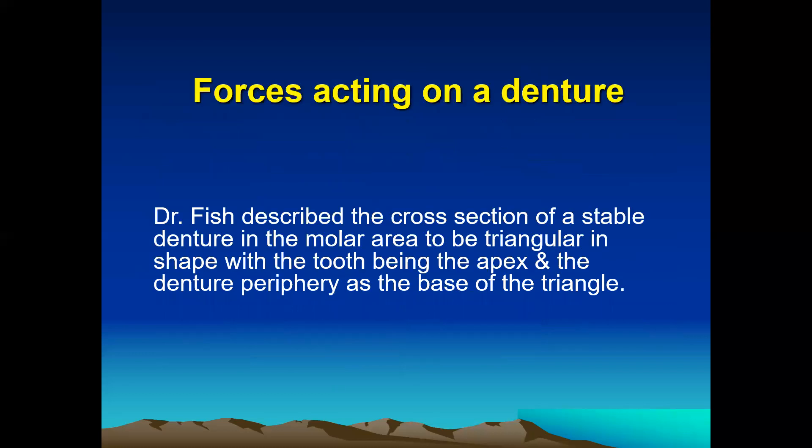In short, regarding the forces acting on a denture, Dr. Fish described the cross-section of a stable denture in the molar area to be triangular in shape, with the tooth being the apex and the denture periphery or the flanges as the base of the triangle.